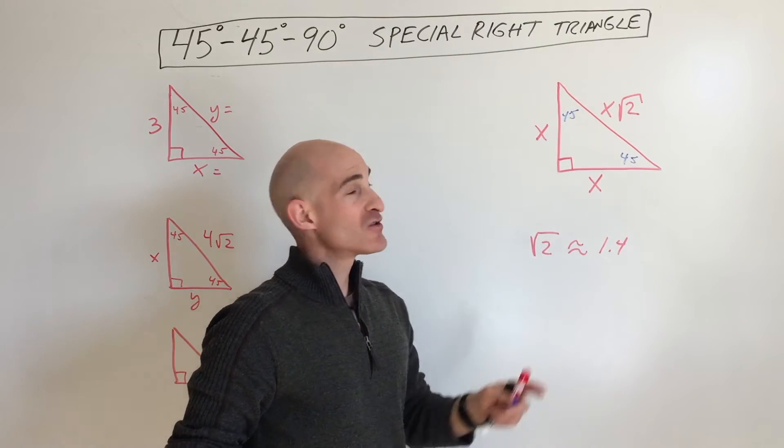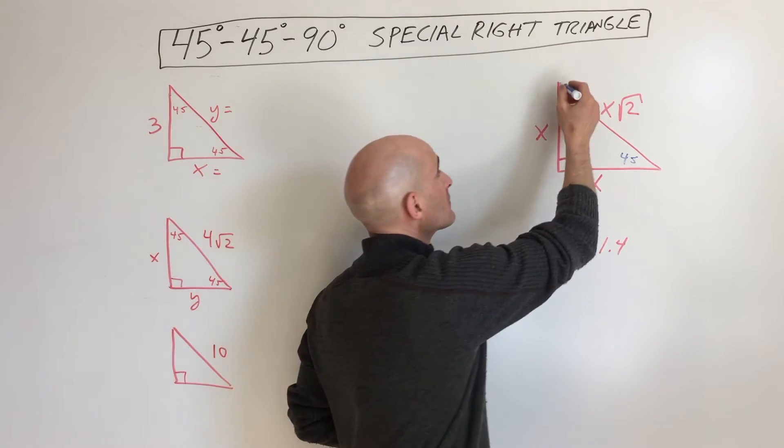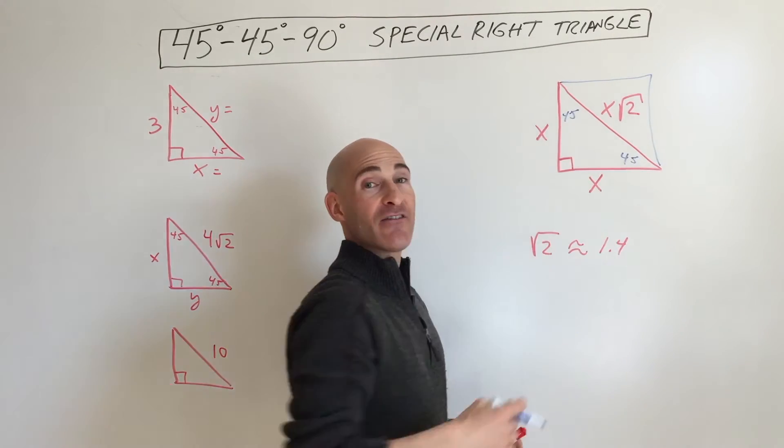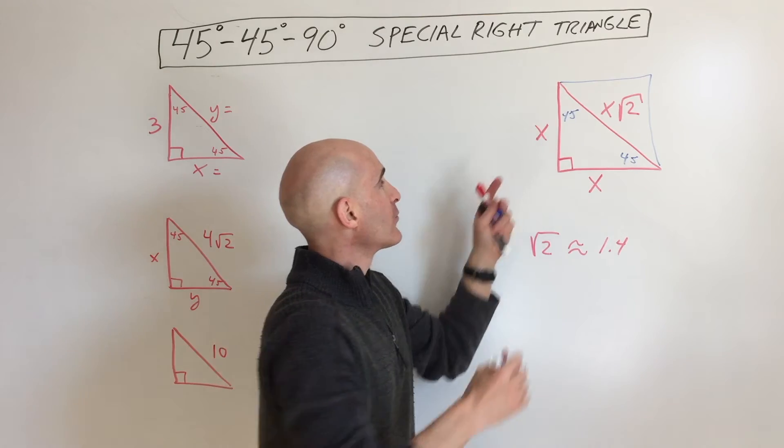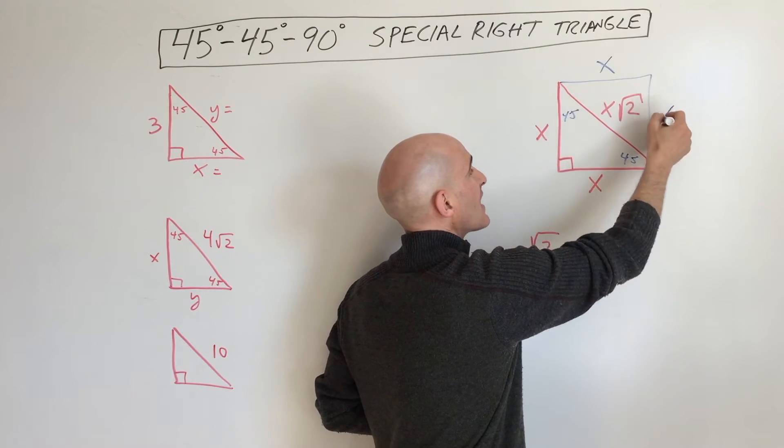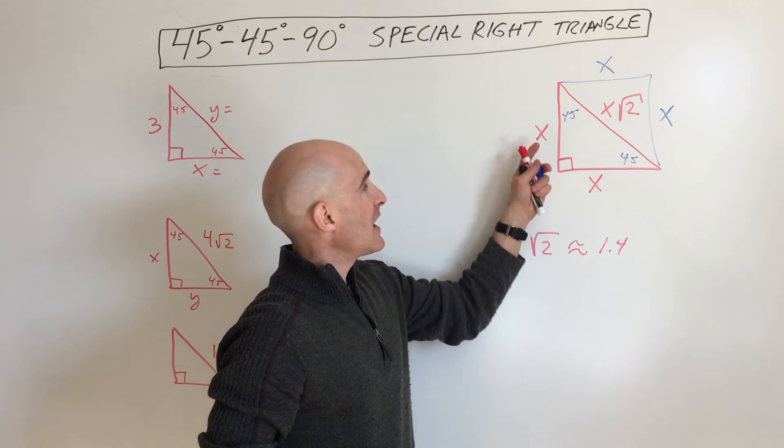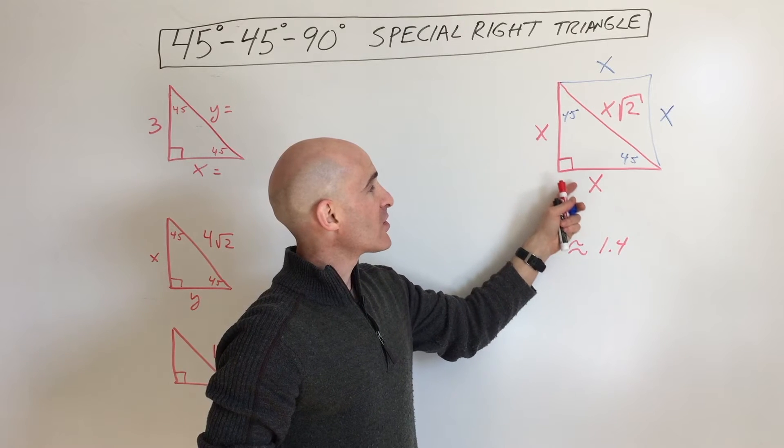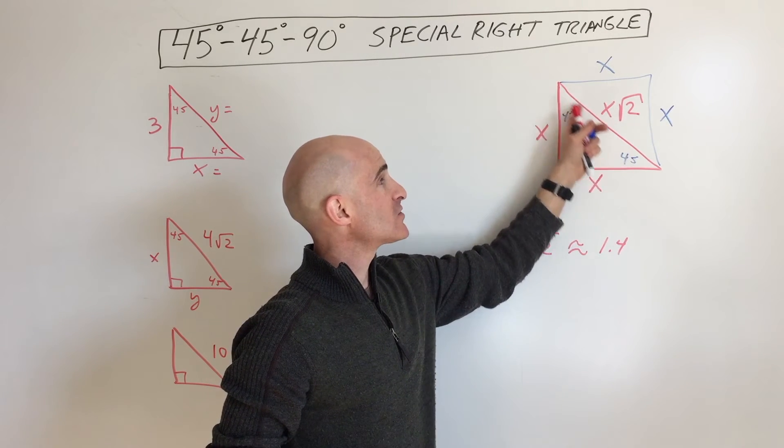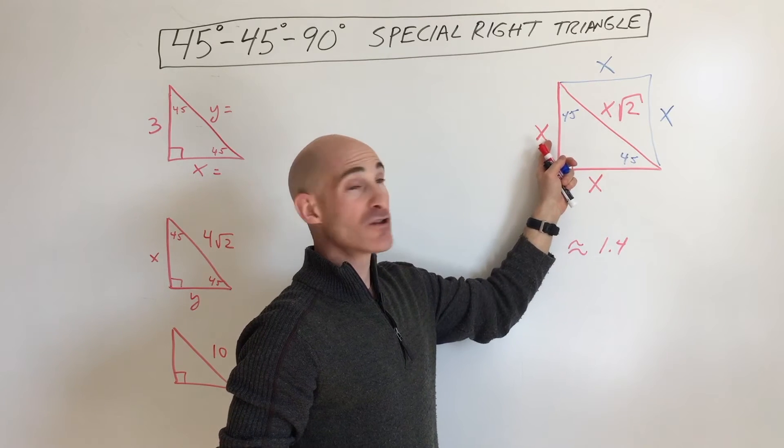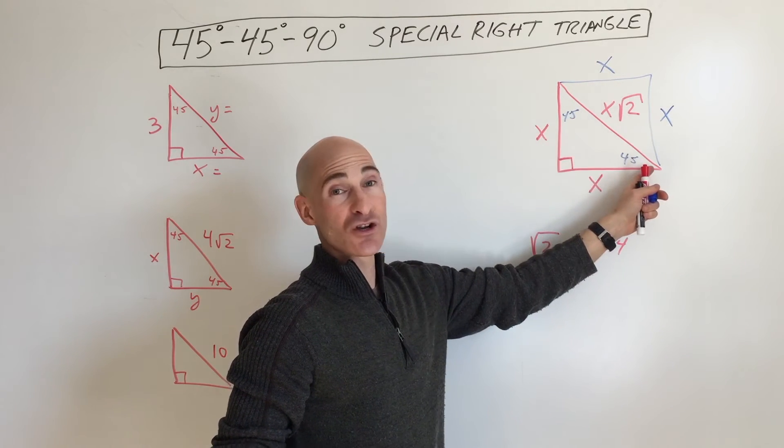And what you can think of is you can think of this as a square that's been cut in half on the diagonal. So if you were to look at this originally, all these sides would be x. And if you do the Pythagorean theorem, a squared plus b squared equals c squared, you'll find that the hypotenuse is whatever the leg is times the square root of 2.